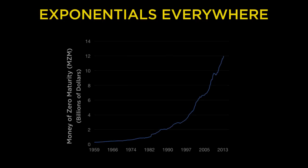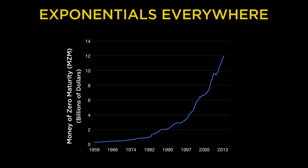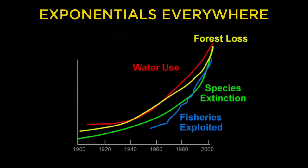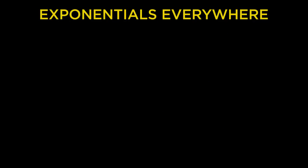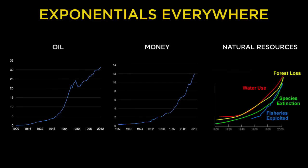Here's the US money supply, which has been compounding at incredible rates ranging between 5% and even 18% per year. So this chart only needs to be a few decades long to see the hockey stick effect. And here's worldwide water use, species extinction, fisheries exploited, and forest cover lost. Each one of these is a critical resource, and quite a few of them are approaching their limits. This is the world we live in. If it seems like the pace of change is speeding up, well, that's because it is.